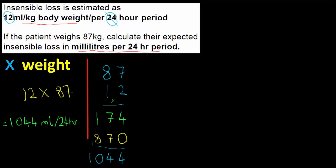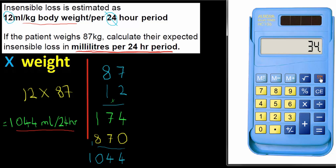The units are millilitres per 24-hour period — it's important to get those units right and in full. Writing 'millilitres per hour' would not be correct. Always look at the units expressed in the question, often shown in bold. Calculator check: 12 times 87 confirms 1044. That's half the paper done — the next video will cover the second half. Thanks for watching!